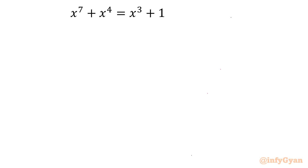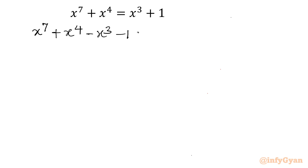While solving this problem, I will use Algebraic Identities, Algebraic Manipulation, Quadratic Equation, Quadratic Formula, Real Solutions, and Complex Solutions. So let us get started by taking all the terms to the LHS. The equation will become x⁷ + x⁴ - x³ - 1 = 0.